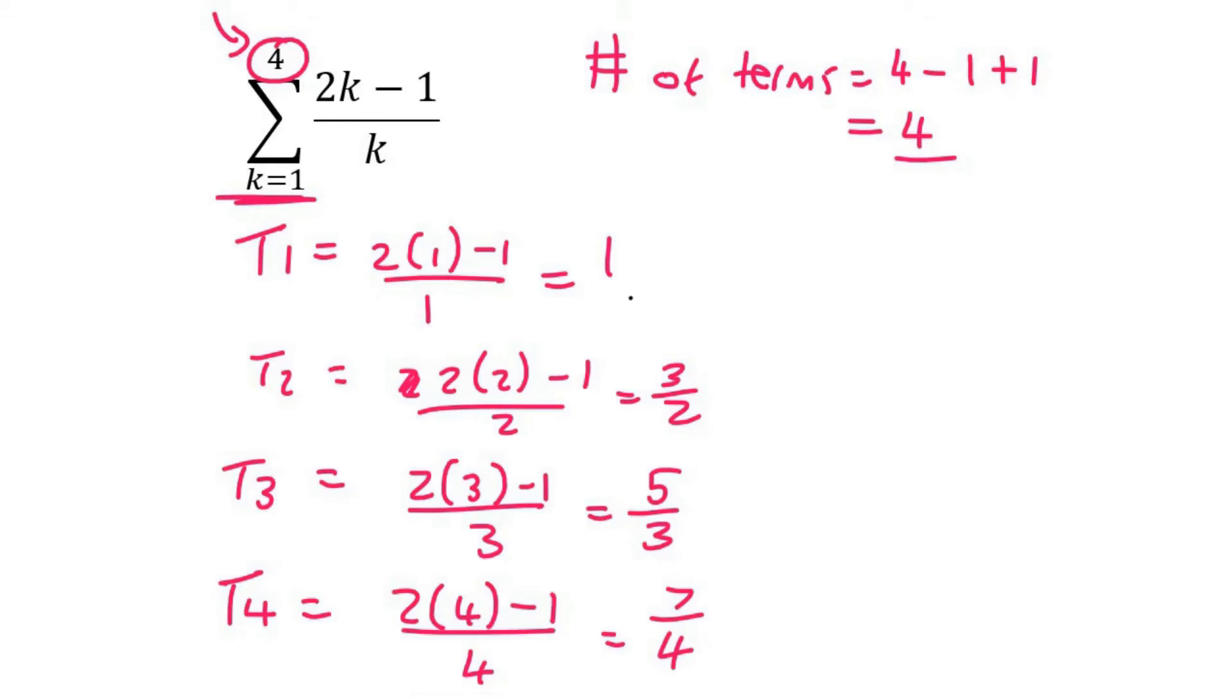Now what we do is we just go add these numbers together, because that would give us the sum. And our answer is 71 over 12, and if it wasn't an exam where you would have two decimal places, you would say 5.92.